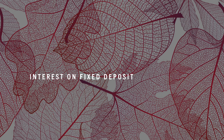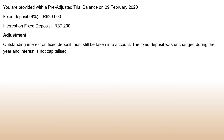I will continue by looking at interest on fixed deposit in a different kind of way. What you should notice is that to calculate interest on fixed deposit, you're supposed to be given the interest rate — either it comes with the interest in the trial balance or inside the adjustment. This particular question provides the pre-adjustment trial balance on 29 February 2020.